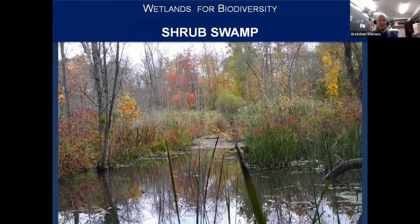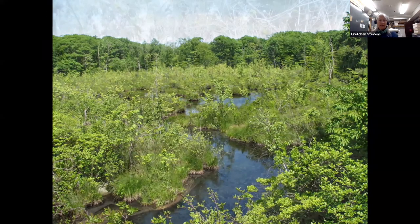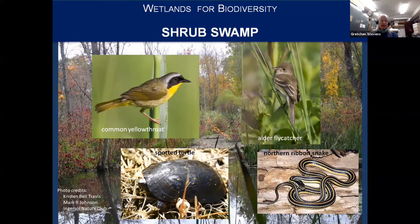A shrub swamp is a wetland dominated by shrubs such as winterberry holly, highbush blueberry, swamp azalea, alders, and buttonbush — a common habitat throughout the region, often interspersed with or adjacent to other kinds of wetlands. Shrub swamps support equally diverse species of plants and animals, including common shrub-nesting birds such as common yellowthroat, and less common species such as alder flycatcher and golden-winged warbler, a New York State species of special concern. Spotted turtle, also a special concern species, and northern ribbon snake use shrub swamps and other wetlands intermittently for foraging.